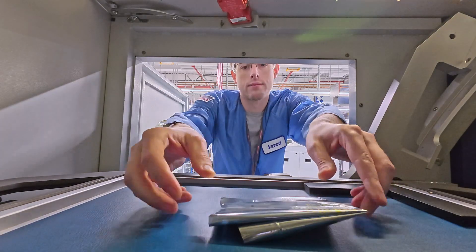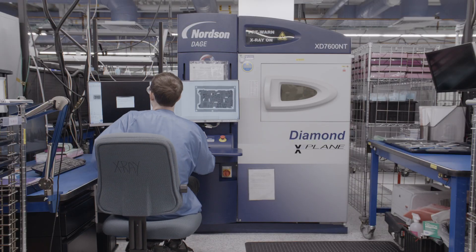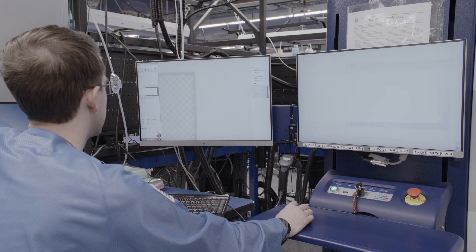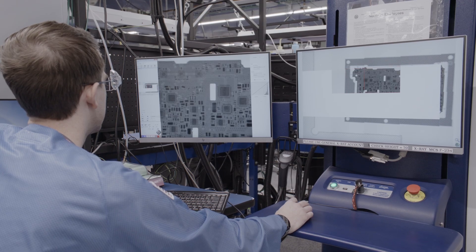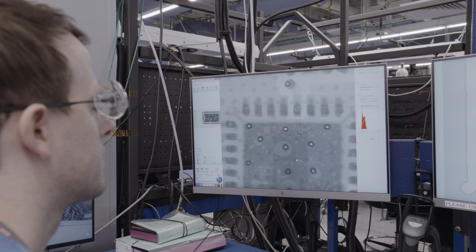Sometimes, what's most important is what you can't see. The X-ray machine looks at hidden solder joints to check components and connections. This verifies that even hidden components meet our standards.